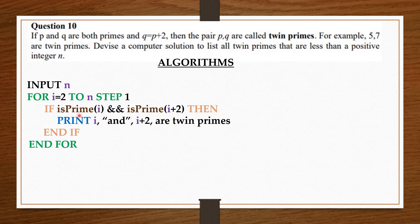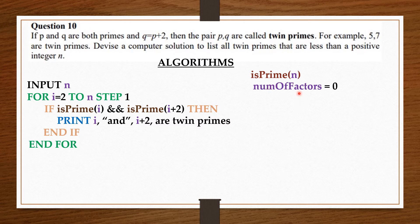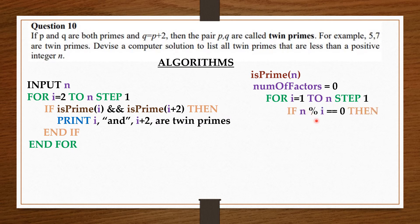Now, isPrime here is a boolean function, meaning we have declared it somewhere else. For a number to be a prime number, that particular number must have only 2 factors. So I am going to declare an empty variable called number of factors, which is going to store the number of factors. I am going to check all values less than n to see how many times they go into n. If they go into n without any remainder, then I increment the number of factors by 1.